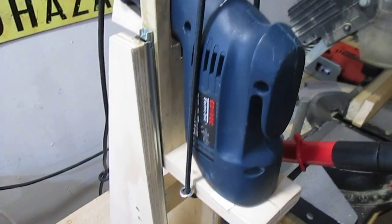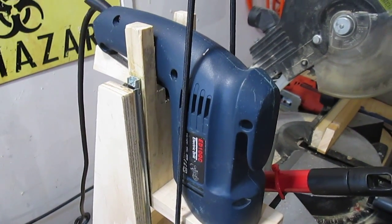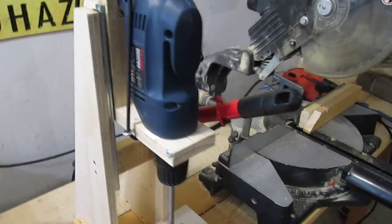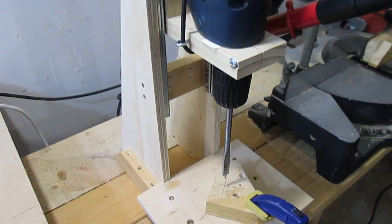Hello, this is my drill press. It was made for about $15 in parts. It's constructed out of ply and dimensional timber.